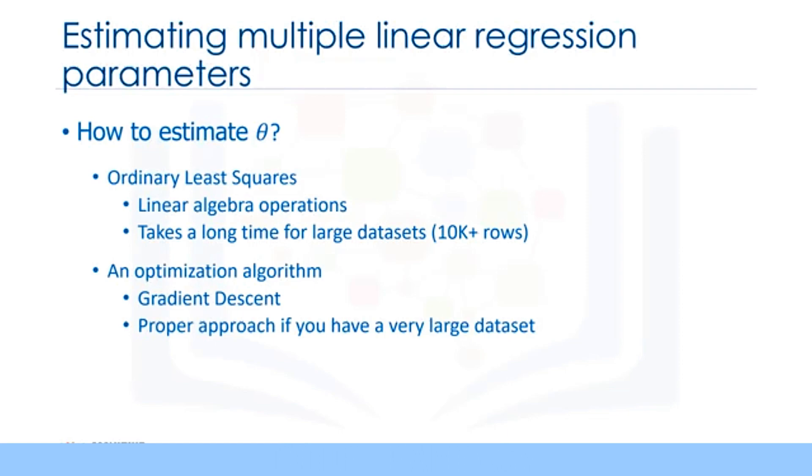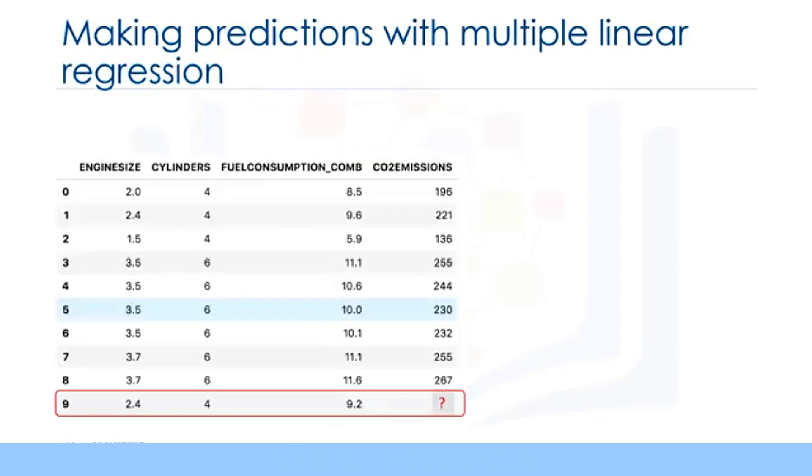After you find the best parameters for your model, you can go to the prediction phase. After we found the parameters of the linear equation, making predictions is as simple as solving the equation for a specific set of inputs. Imagine we are predicting CO2 emission or Y from other variables for the automobile in record number 9. Our linear regression model representation for this problem would be Y hat equals theta transpose X.